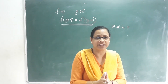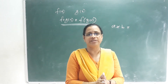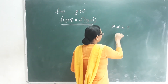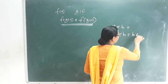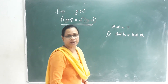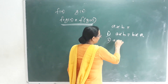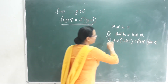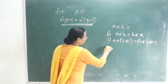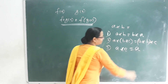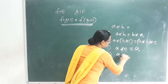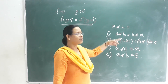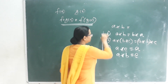Binary operations have several properties. First, the Commutative property: a★b = b★a. Second, the Associative property: (a★b)★c = a★(b★c). Third, the Identity property: a★e = a, where e is the identity element. Fourth, the Inverse property: a★b = e, meaning b is the inverse of a.